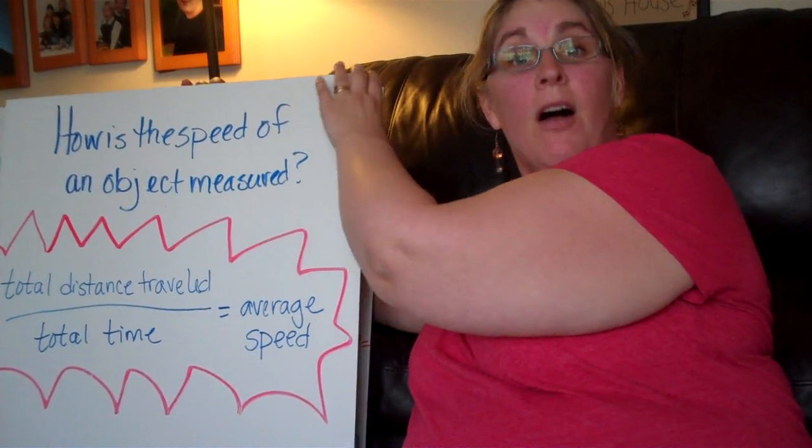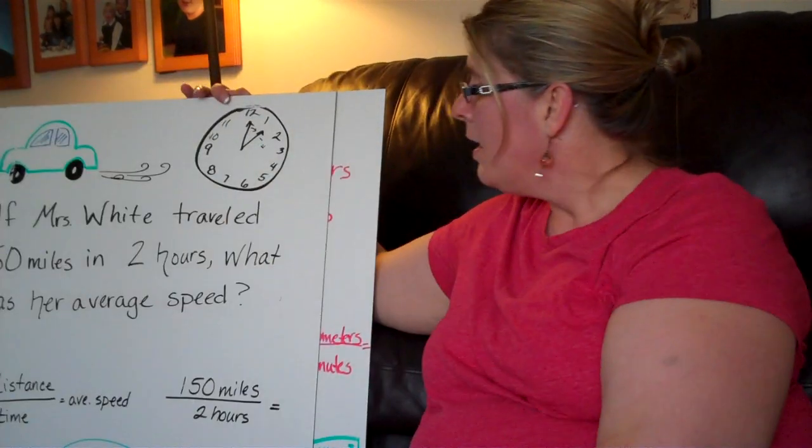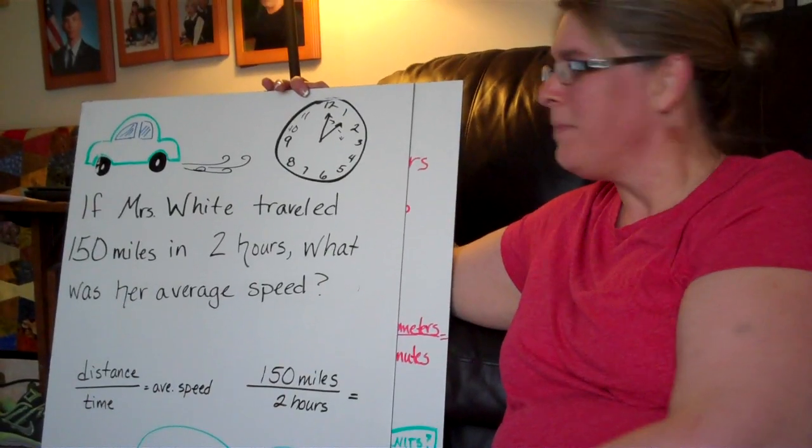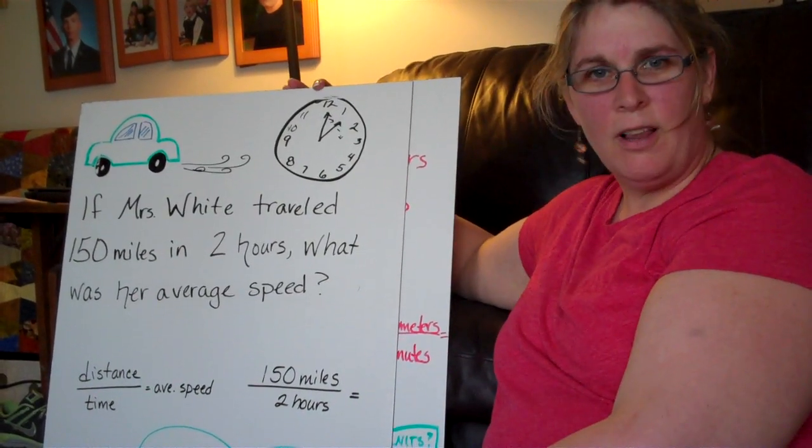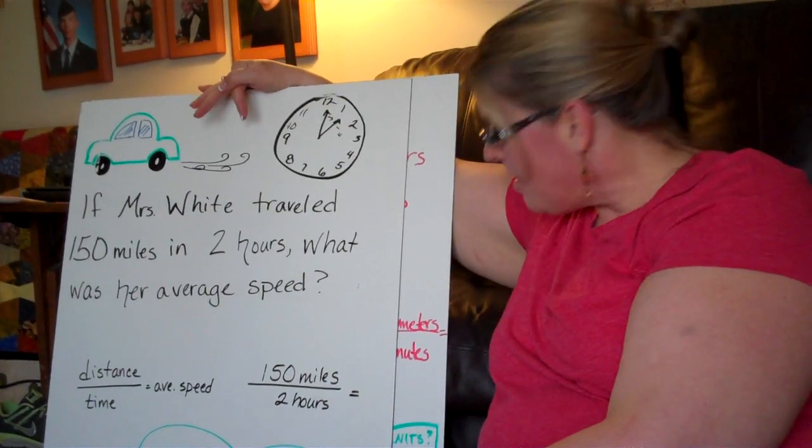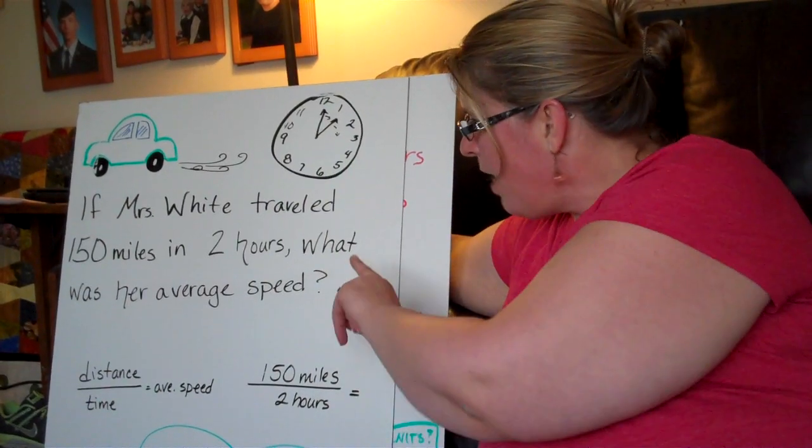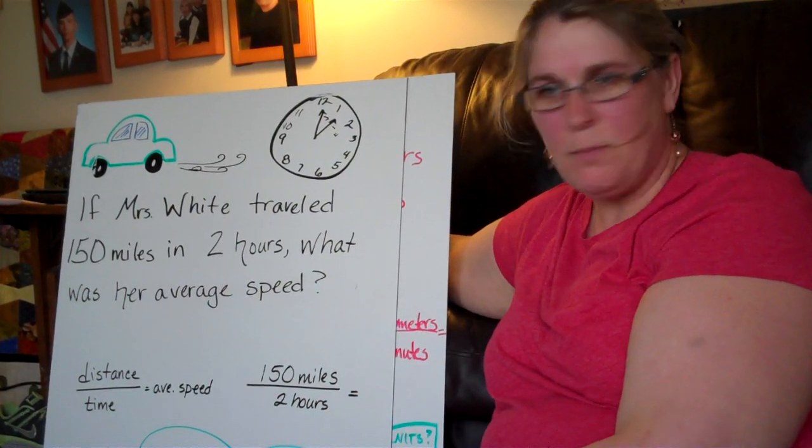Write that in your notebook on page 70. Now here's an example for you. If Mrs. White in her fancy pants little green car with her wonderful little clock traveled 150 miles in two hours, what would her average speed be?